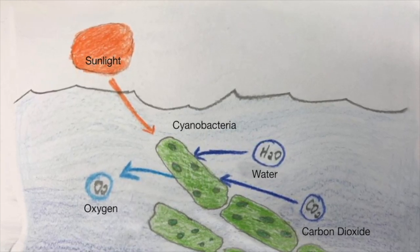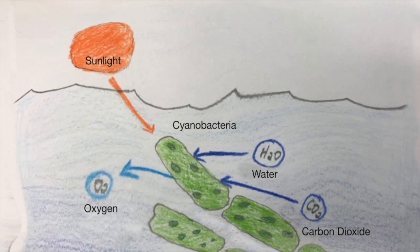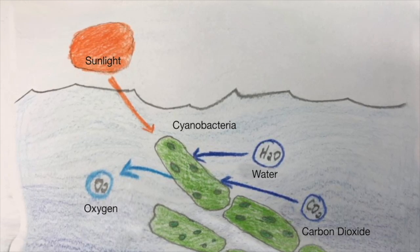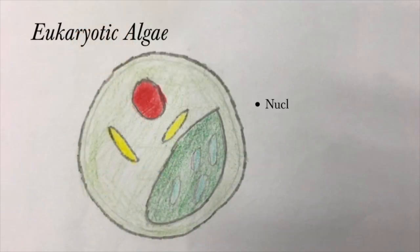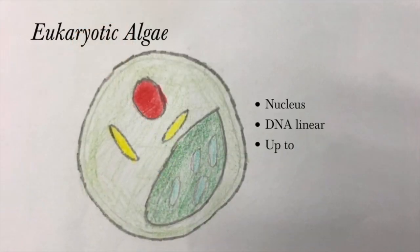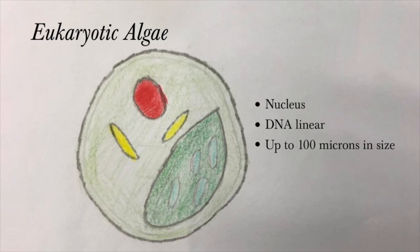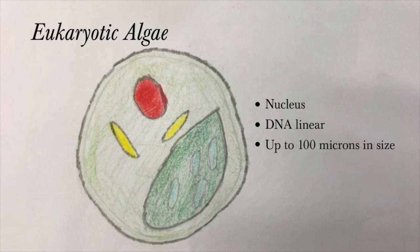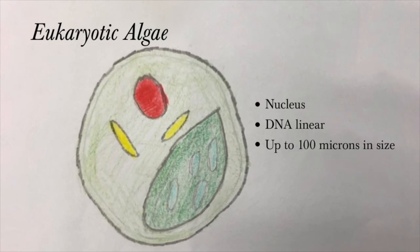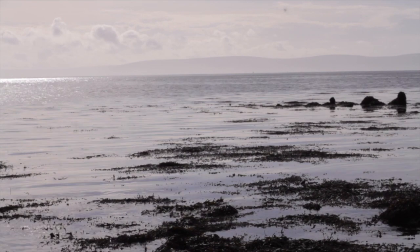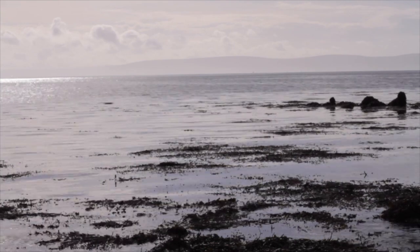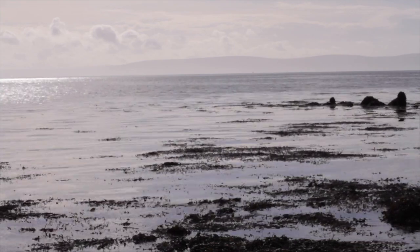These cyanobacteria evolved over the next several million years to become the first red and brown algae about 1.2 billion years ago, and then green algae almost 750 million years ago. The levels of oxygen in the ocean and the atmosphere continued to rise.